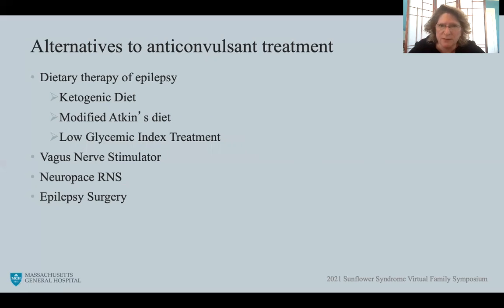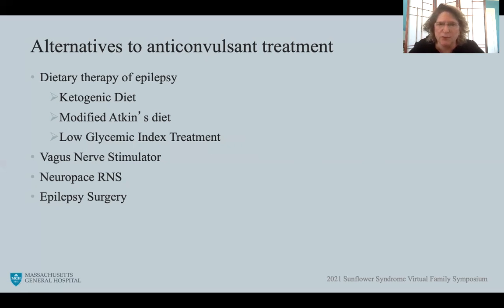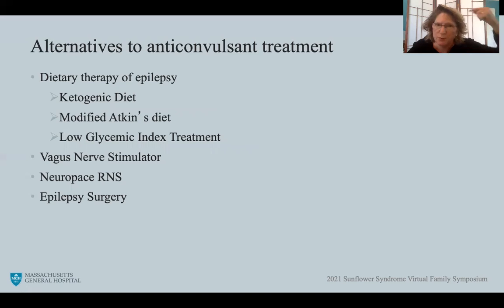The vagus nerve stimulator is one of our neurostimulator options. It involves the surgical implantation of a device that provides intermittent stimulation to the vagal nerve, which can effectively improve seizure control. The NeuroPace responsive neurostimulator is a newer device that provides stimulation directly to the brain. For this device, you need to know roughly where in the brain the seizures are coming from, in order to place electrodes in that area to sense when a seizure is occurring and stimulate to stop it.